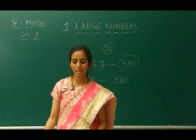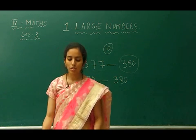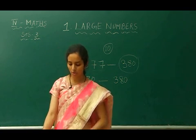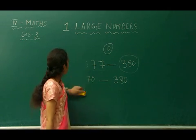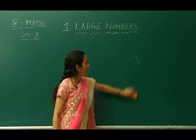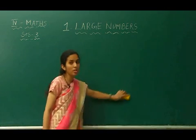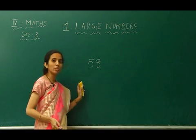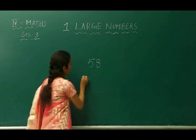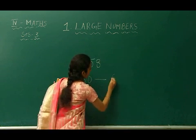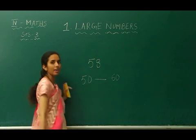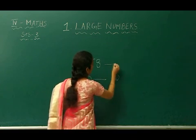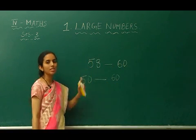Next question. Pankaj was taking sweets for his friends at school. There are 58 children in his class. How many sweets should he take, rounded to the nearest ten? Pankaj is taking sweets to his friends. 58 children are there. Round it up to the ten. 58 lies in between 50 and 60. After 5, the digit 8 is there. 8 is bigger than 5, so we have to round it up to the upper limit, that is 60. The round figure for 58 is 60.